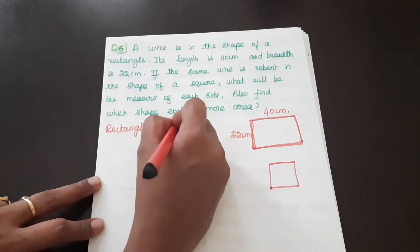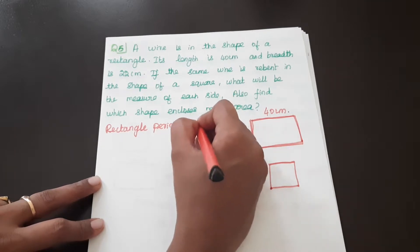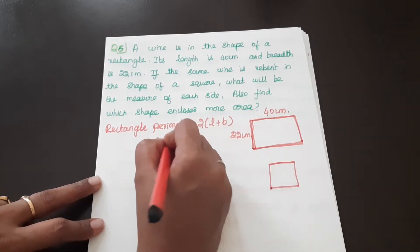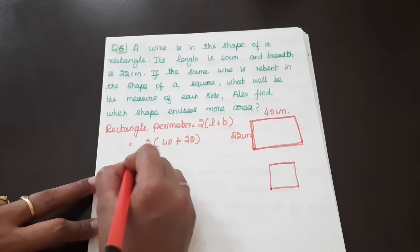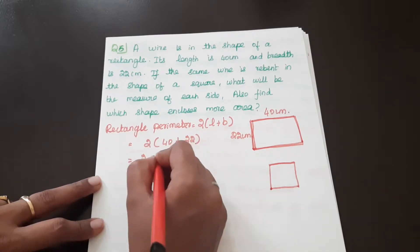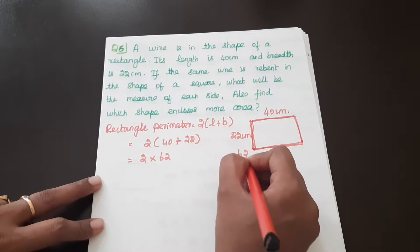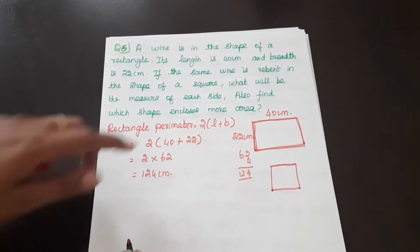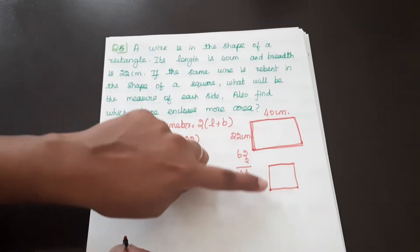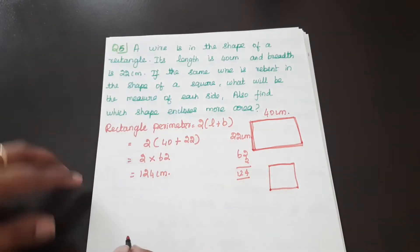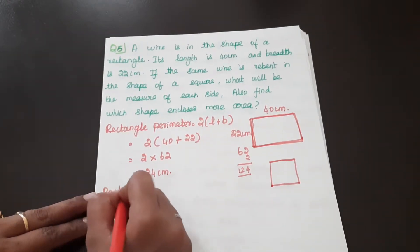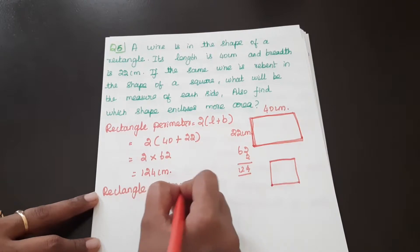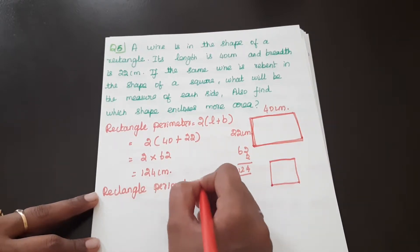Perimeter of rectangle formula is 2(L + B). L equals 40, B equals 22. So 2 into (40 plus 22) equals 2 into 62 equals 124 centimeters. So the rectangle wire perimeter equals the square perimeter.